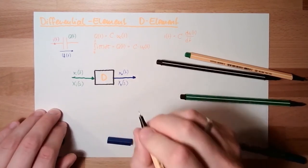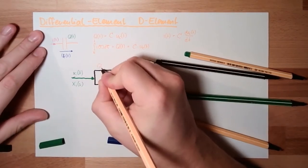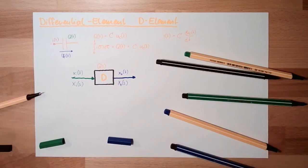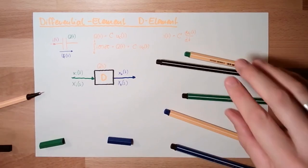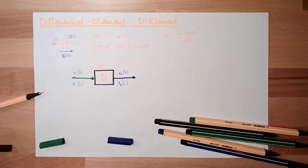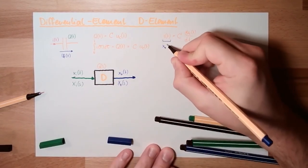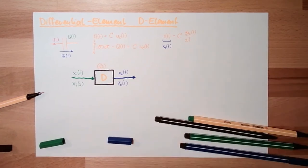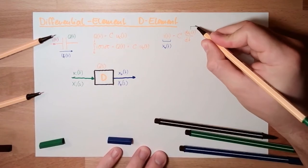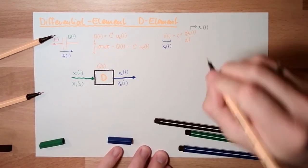And of course, we again do have a transfer function here, G from S, which is describing this transition. In our case, the output is the current, so this here is XO. And the input is the voltage. This is XI.